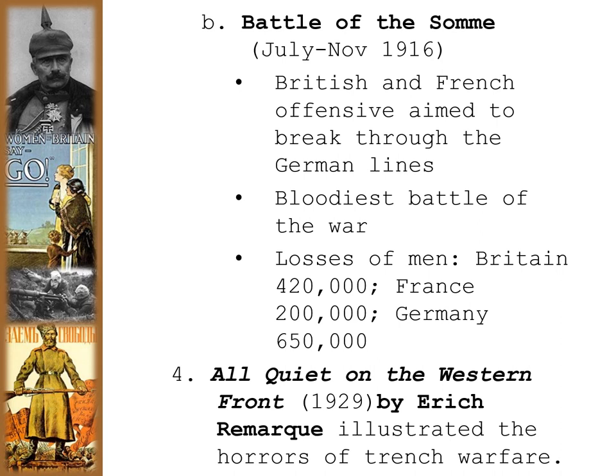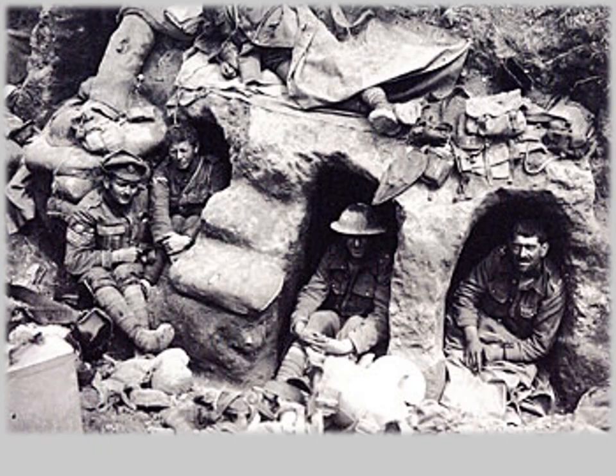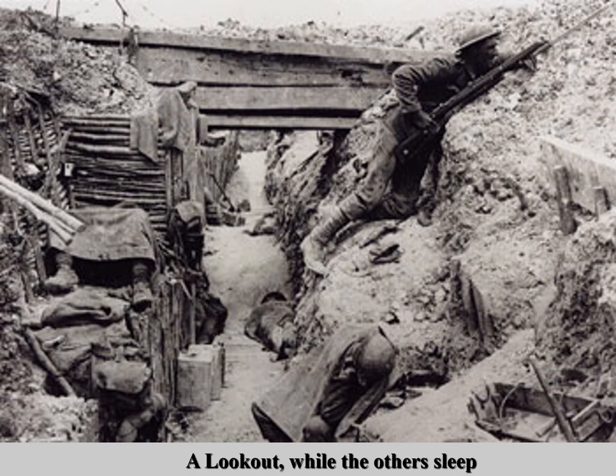A novel written by Erich Maria Remarque, published in 1929 — All Quiet on the Western Front — illustrates the horrors of trench warfare. He had actually served on the German front lines on the Western Front and survived the war to write this anti-war book. Conditions in the trenches were terrible: dead bodies, water filling the trenches, trench foot, gangrene, rats and lice everywhere. You couldn't go anywhere — try to go over the top and you'd be mowed down.